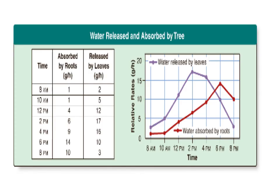Here is an example of a two-line line graph. The independent variable is on the x-axis — time. The dependent variable is the amount of water absorbed by roots or released by leaves. The big thing to notice is that the value of each box must be the same — time goes 8 a.m., 10 a.m., 12 p.m., 2 p.m., a two-hour difference each time. The y-axis goes 5, 10, 15, 20. It must be constant or you will lose points on the Regents.